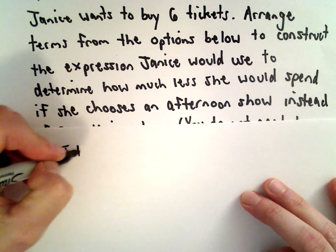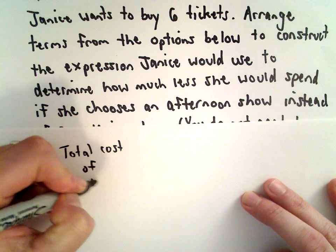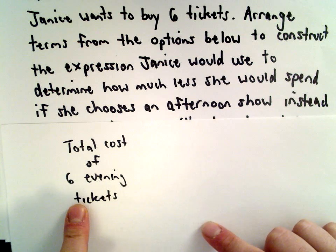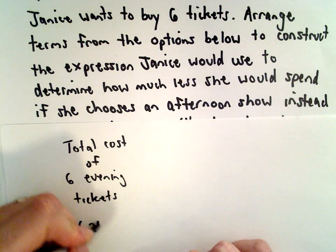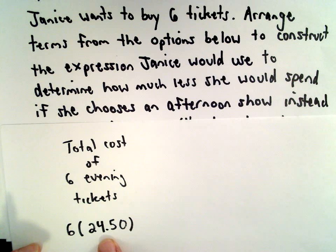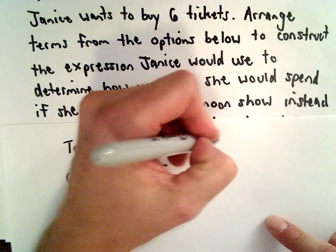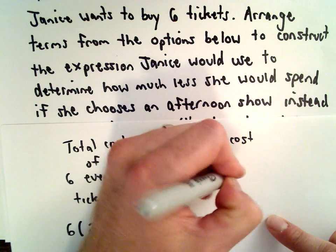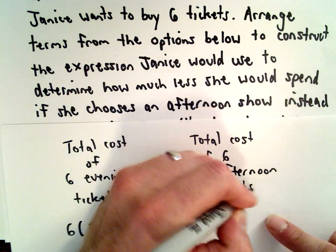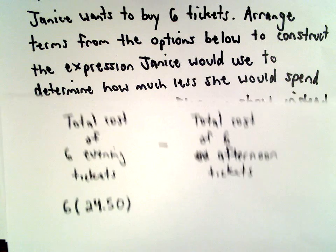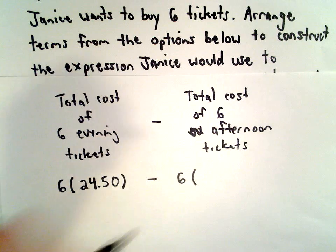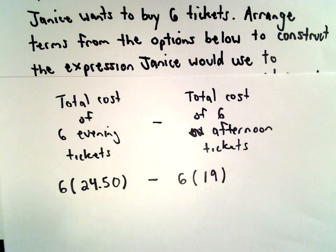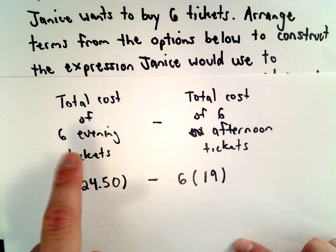To start off, intuitively, we want to figure out the total cost of six evening tickets. If we know the total cost of six evening tickets, that's going to be six multiplied by $24.50. If she bought six at that rate, we could subtract from that the total cost of six afternoon tickets. When we figure out that price difference, that's going to be how much she would save — we would subtract six multiplied by $19.00. That's the more expensive rate minus the cheaper rate, which is how much more she's paying for evening tickets instead of afternoon tickets.